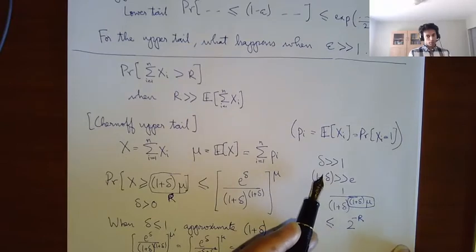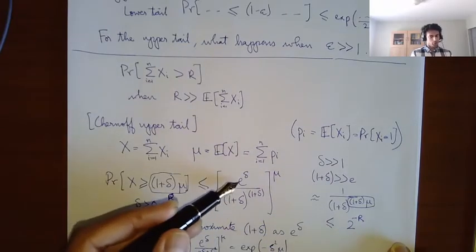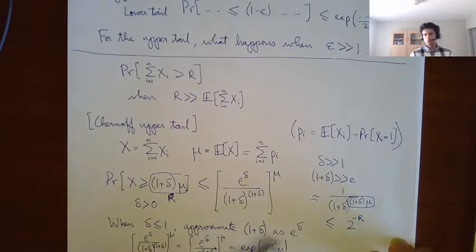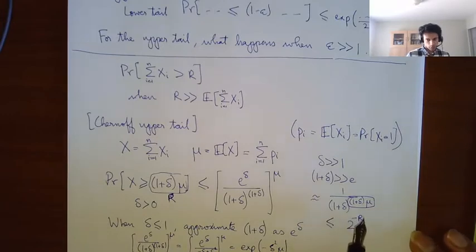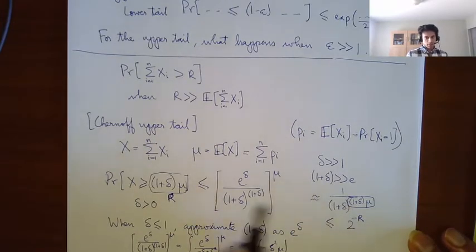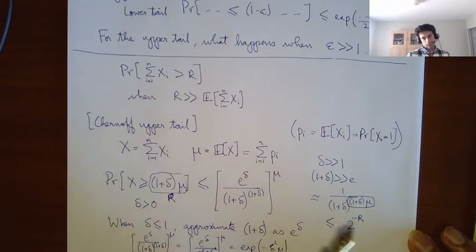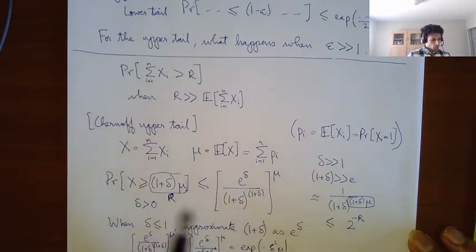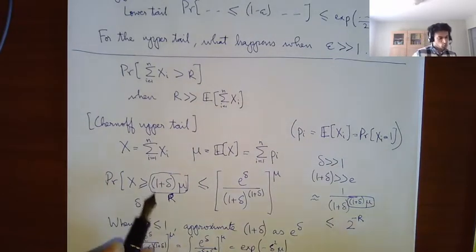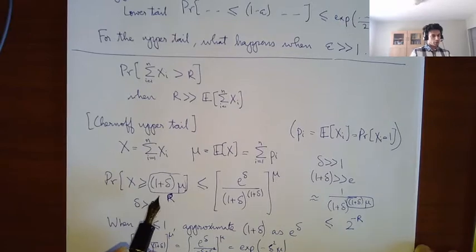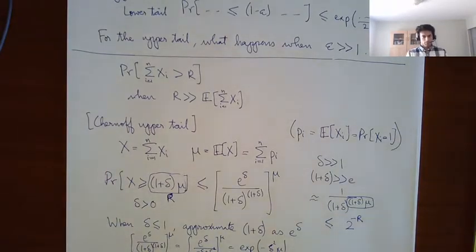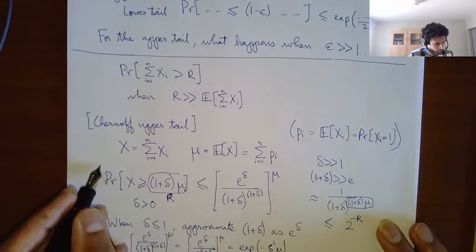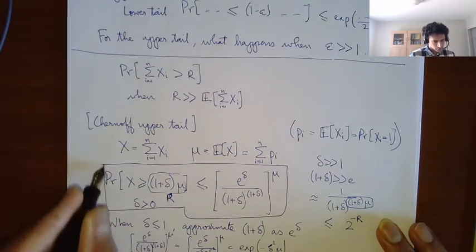When delta is much larger than 1, the expression is just 1 divided by (1 plus delta) to the power (1 plus delta times mu). When 1 plus delta is much larger than 2, you can write this as 2 to the minus r, where r is 1 plus delta times mu. So the probability of being more than r is 2 to the minus r, when you are looking at deviations much larger than the expectation itself. This is independent of mu. When delta is much smaller than 1, you do a Taylor approximation — 1 plus delta is e to the delta — and you get the well-known delta squared mu. When delta is much larger than 1, the denominator essentially completely subsumes the numerator.